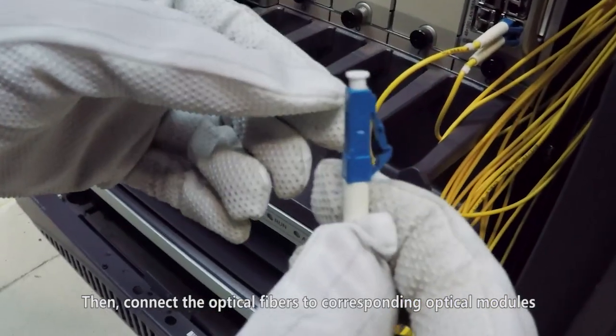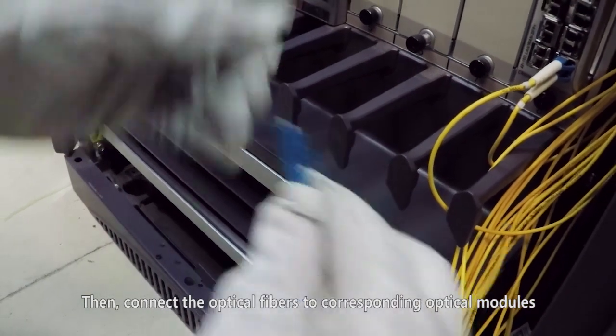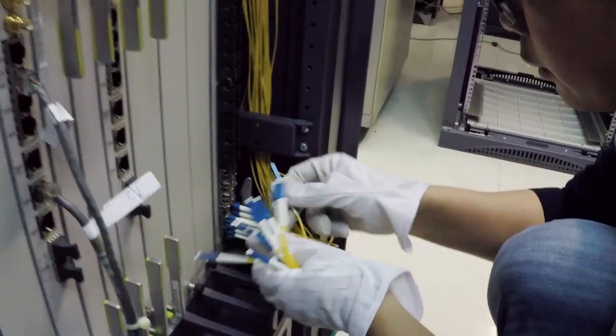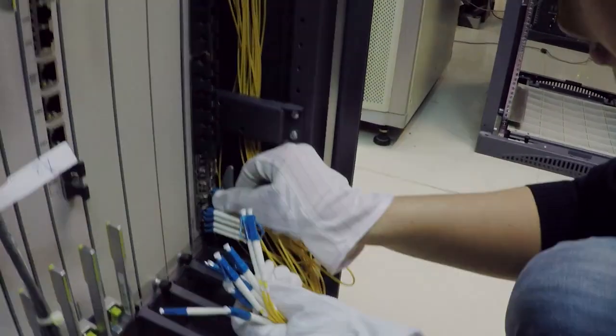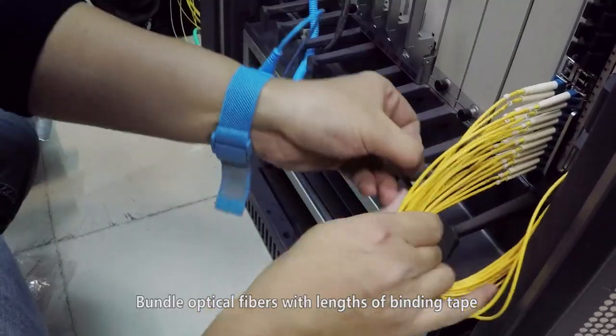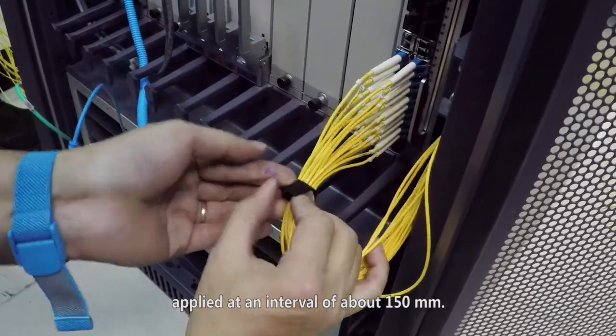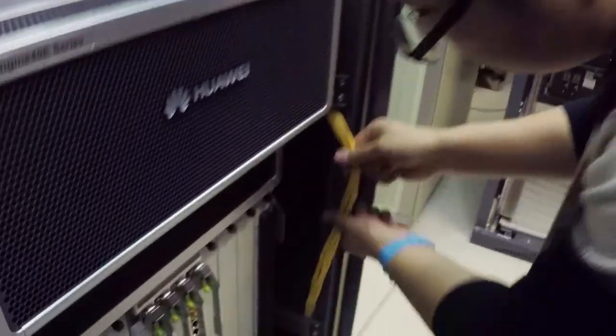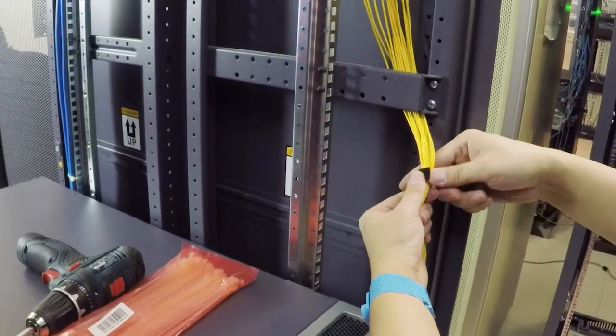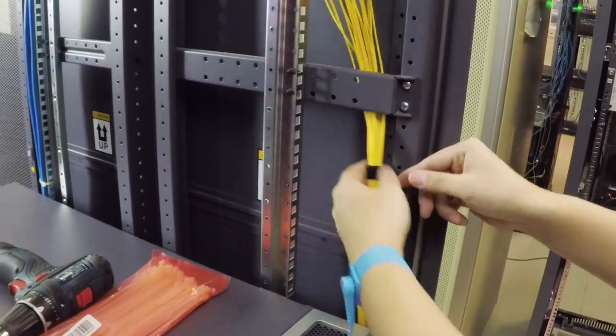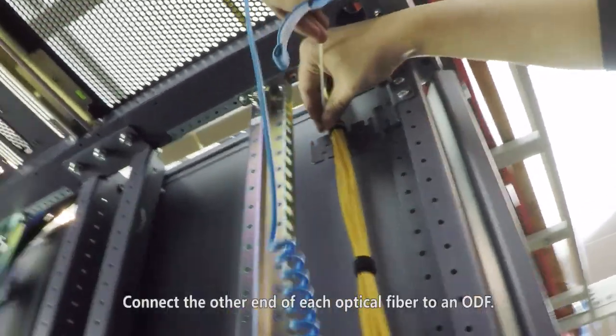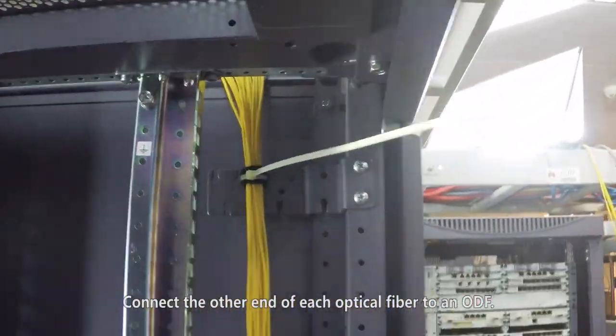Then, connect the optical fibers to corresponding optical modules according to relevant label information. Bundle optical fibers with links of binding tape applied at an interval of about 150 millimeters. Use cable ties to secure the optical fibers to the cable tray. Connect the other end of each optical fiber to an ODF.